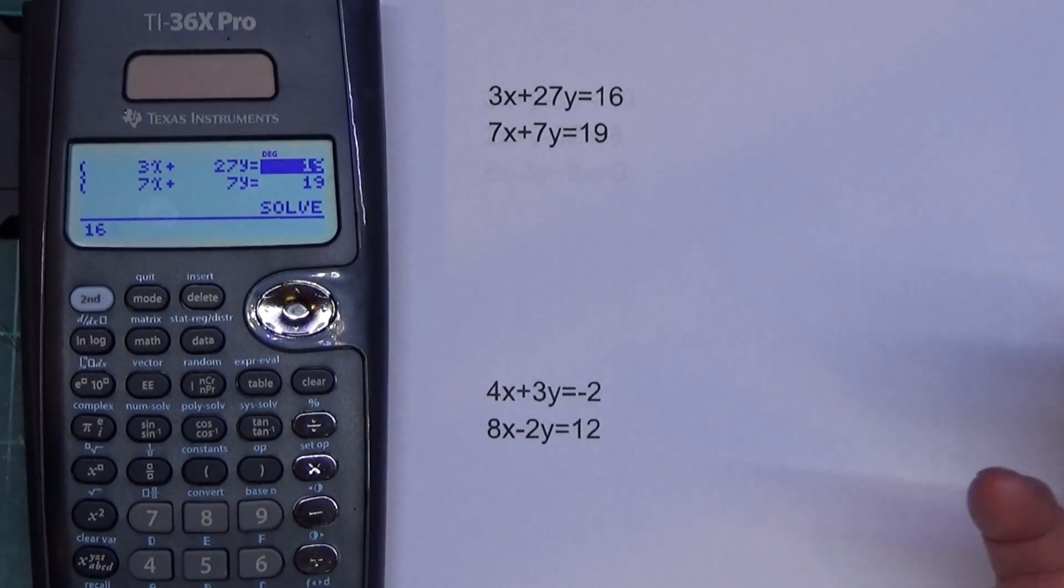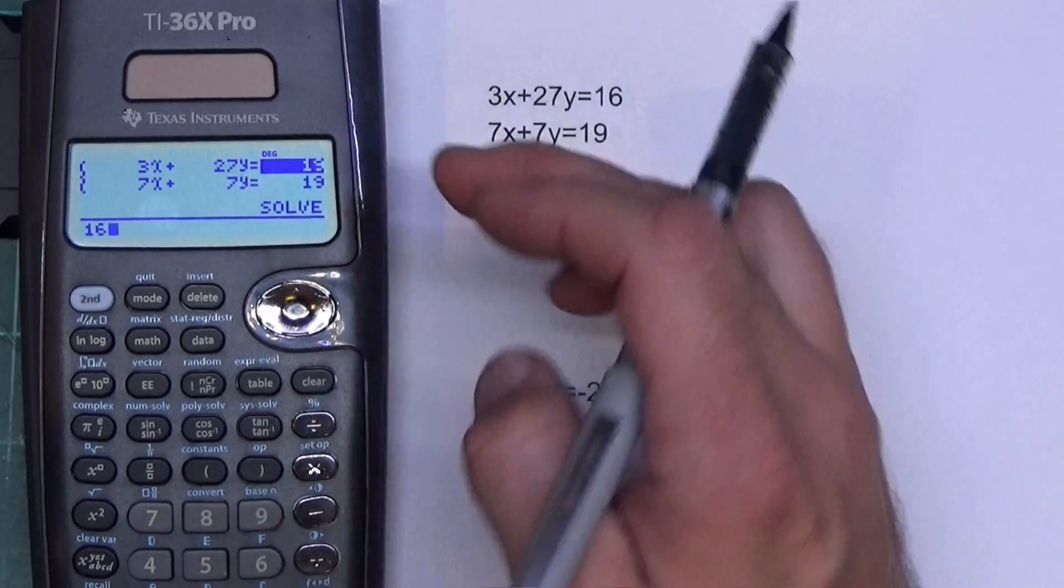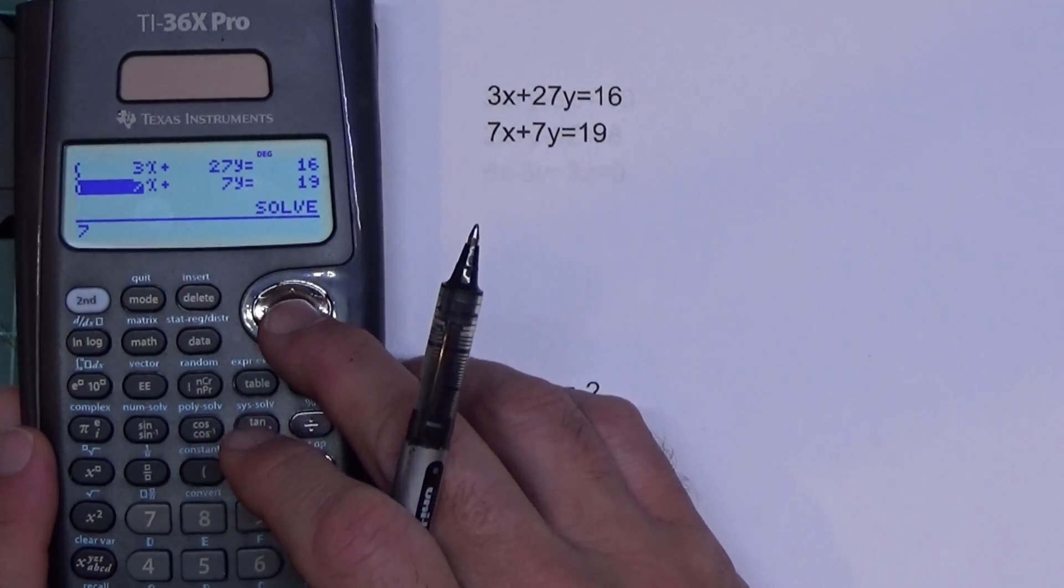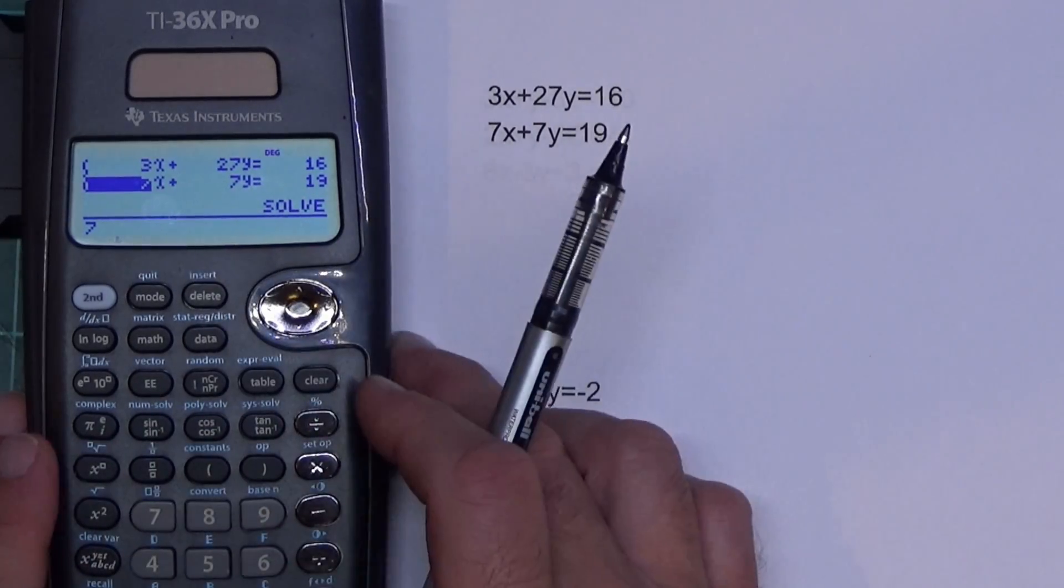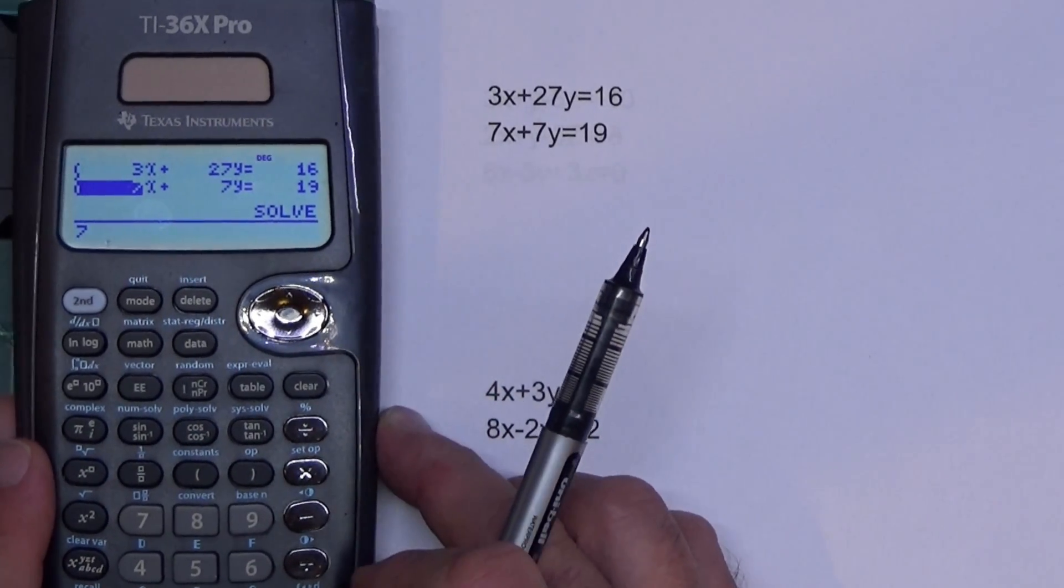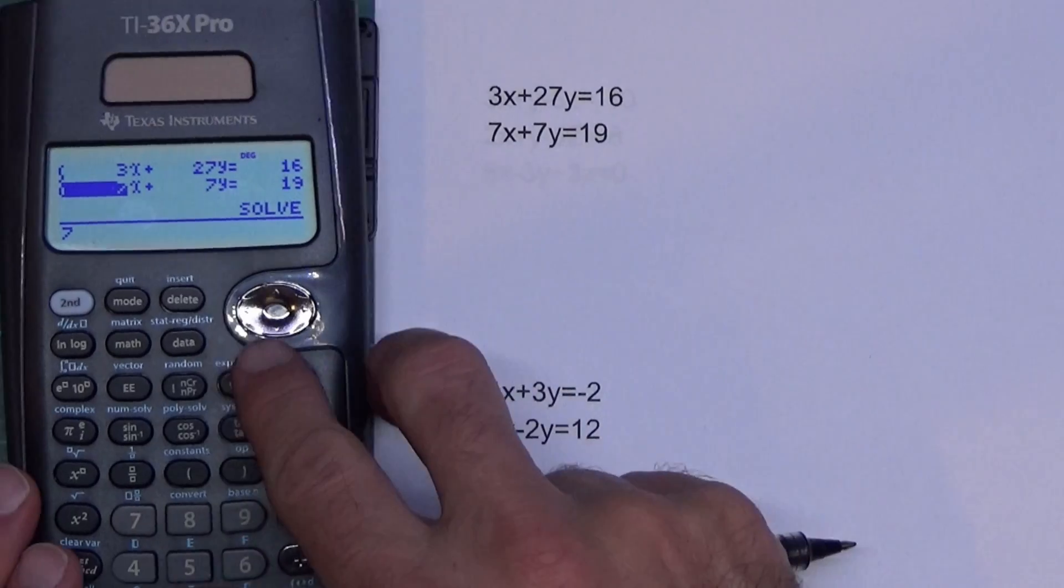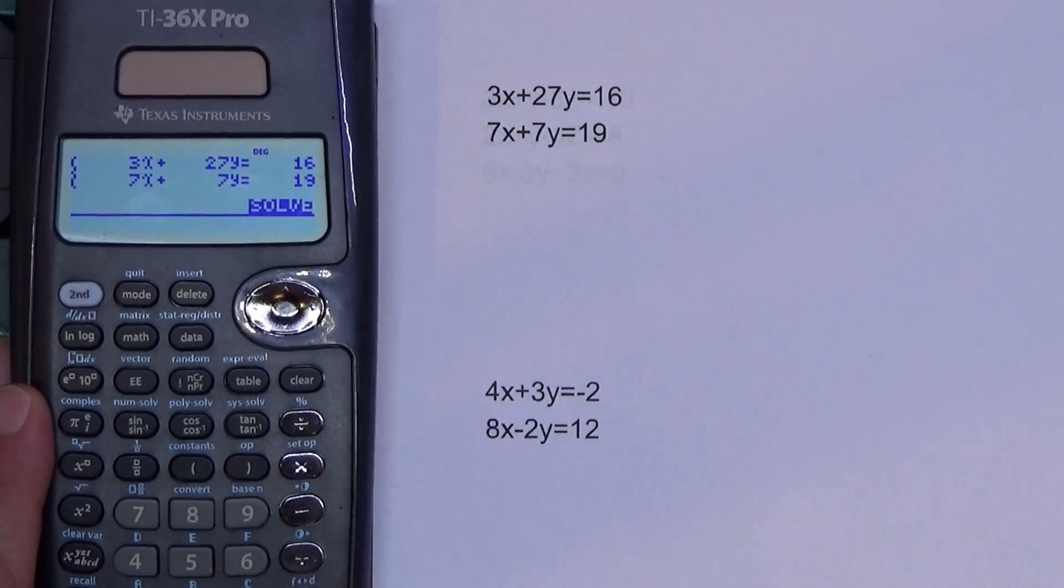That happens. And I'm kind of glad I did it. So I can show you, just move the cursor to it, type in the 16. So we have three, 27, 16, seven, seven, and 19. Does everyone see that? Yes. Okay. Then we just go down to hit solve and press enter.